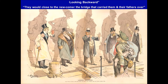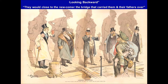This is a famous political cartoon called Looking Backward. The caption reads: 'They would close to the newcomer the bridge that carried them and their fathers over.' You see a poor immigrant coming across with everything on his back, while wealthy men in top hats try to stop him. Look at the shadows behind those wealthy men — they appear to be poor immigrants themselves from a generation earlier. The cartoon points out the hypocrisy: your great-grandfather benefited from immigration, so why won't you let this new group do the same?